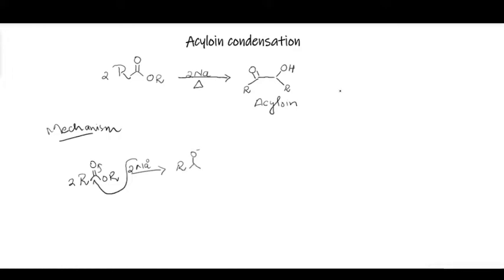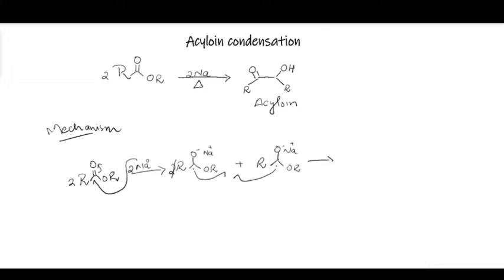The radical anion has a radical at the previously carbonyl carbon and an oxyanion, with sodium as the counter ion. We will have two radical anions generated because we started off with two ester molecules. These two radicals can then condense together and form a bond with each other, giving rise to a coupled intermediate like this.